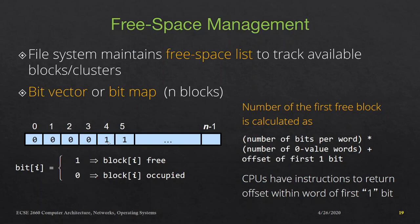So the offset in this case is 5. In the equation, we find the first free block by taking 8 (bits per word) multiplied by 0 — because there were no 0-valued words during scanning, the 0th word was itself a non-zero word — plus the offset of 5. So 8 times 0 plus 5 equals 5, meaning the 5th bit indicates block 4 is your first free block.